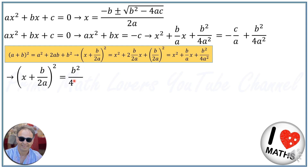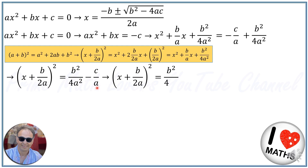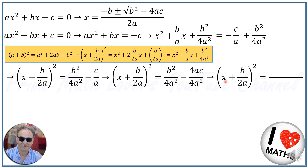Replacing the left hand side with (x + b over 2a)², that equals b squared over 4a squared. Then rearranging the right hand side — multiplying the first fraction by 4a to get a common denominator — and combining the fractions, I have (x + b over 2a)² is equal to b squared minus 4ac over 4a squared.